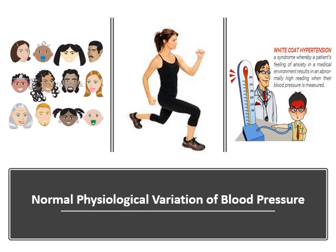Sleep is another important normal physiological variation. During quiet sleep, arterial blood pressure decreases. During stressful sleep — with dreams or nightmares — it increases. The details of changes in arterial blood pressure and heart rate during REM and non-REM sleep will be discussed next year with CNS physiology.